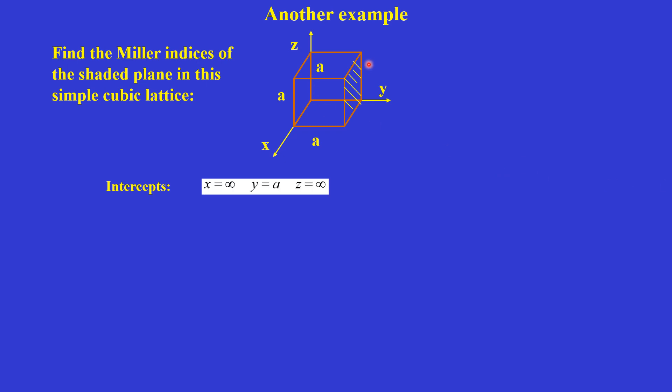Similarly, if we have to find the Miller indices for this shaded plane which is along only the y-axis, it is cutting only the y-axis and not intercepting the x and z axes. So we take x and z as infinite and y as a.